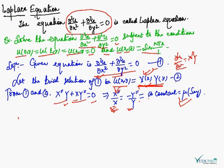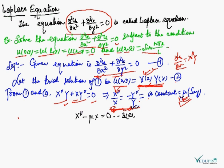Comparing with μ, we write the two ordinary differential equations: X'' − μX = 0 (equation 3a), and Y'' + μY = 0 (equation 3b).